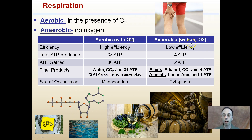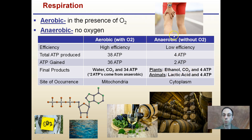In anaerobic respiration, without oxygen, there is very low efficiency — only two ATPs are gained. In plants, ethanol, carbon dioxide, and four ATPs are produced; this is called fermentation, as seen in the fermentation of grapes into wine. In animals, we generate lactic acid. If you've ever had sore muscles after an intense workout, that's because your muscles generated lactic acid — it's literally a burning effect because it's an acid.